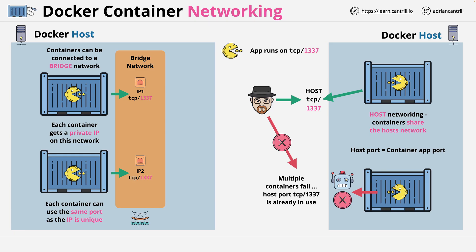By default, these two containers can communicate with each other directly because they're on the same bridge network. Any containers on the same bridge network can communicate, but they can't be reached from outside of the Docker host. For that, we need to publish them, and the way this is done is by publishing a container port to a host port — you'll often see this written as host port colon container port.